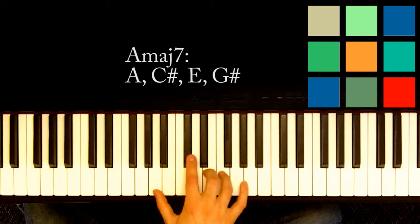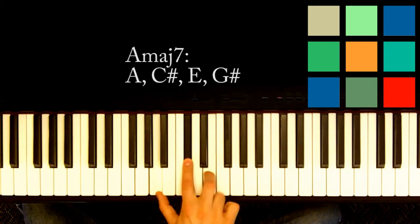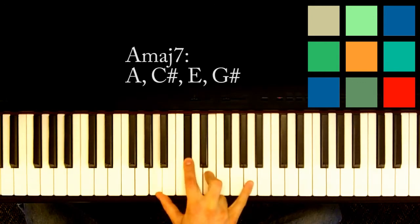So here's an A major 7, you just start with an A, a C sharp, and an E. That's your A major, just your A chord, and then you add a major 7.